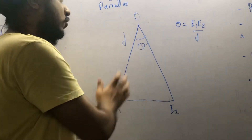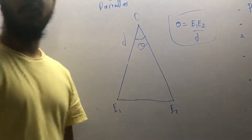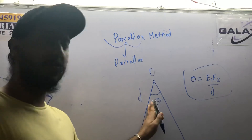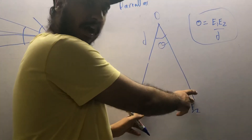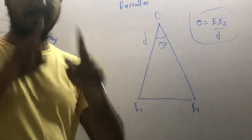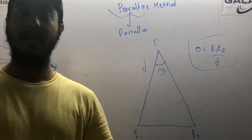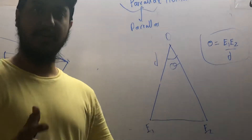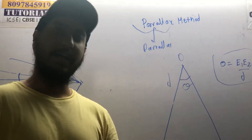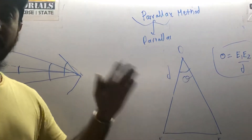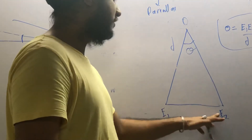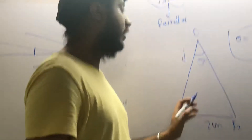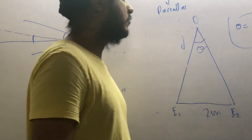Distance d is what we want to find. This formula comes from the plane angle concept, since the angle is very small and E1E2 is treated as an arc. The distance between our two eyes is about two centimeters, while the star may be two to three light years away — a light year being the distance traveled by light in one year. So the angle is extremely small.